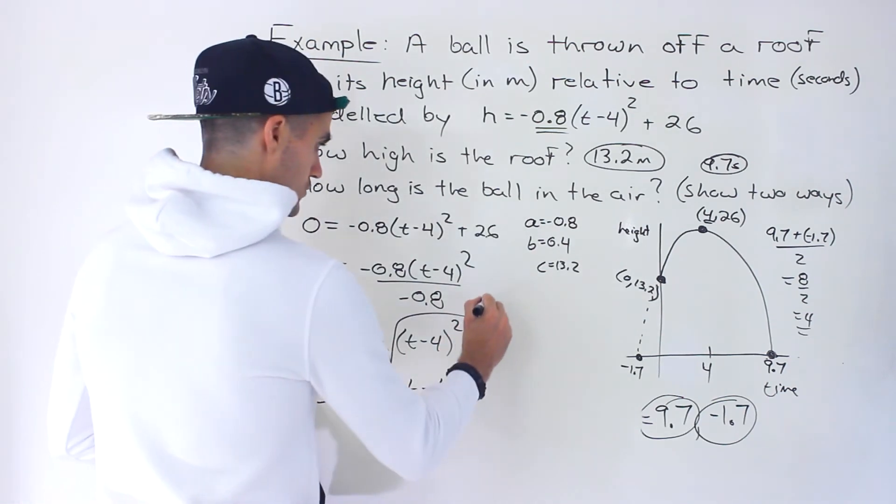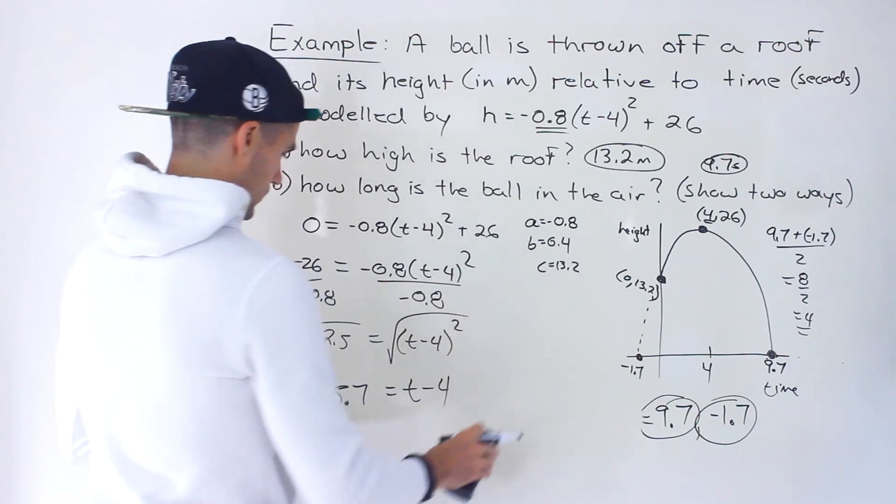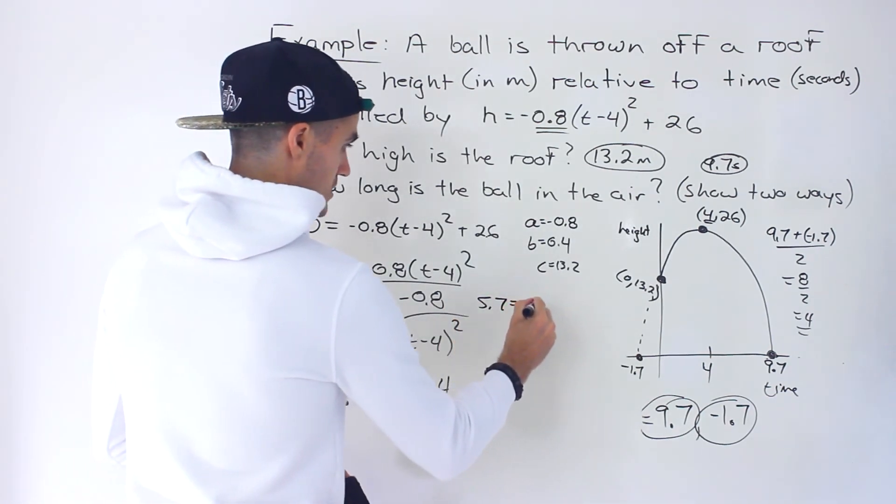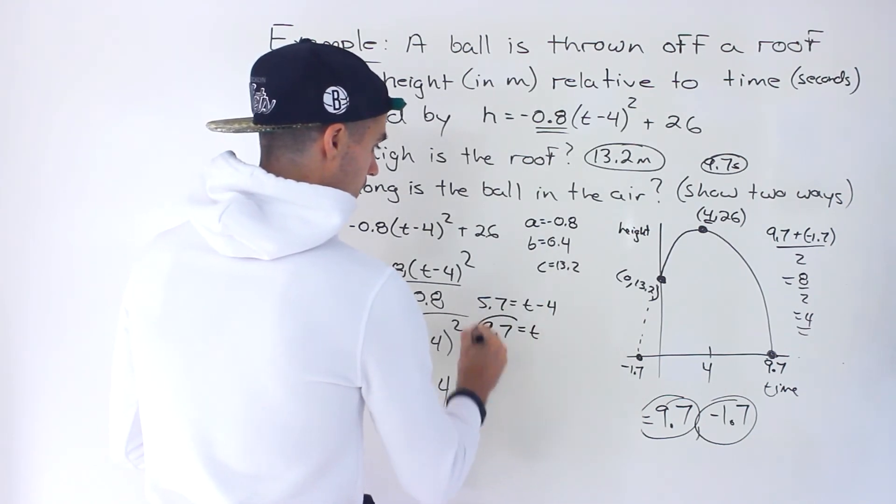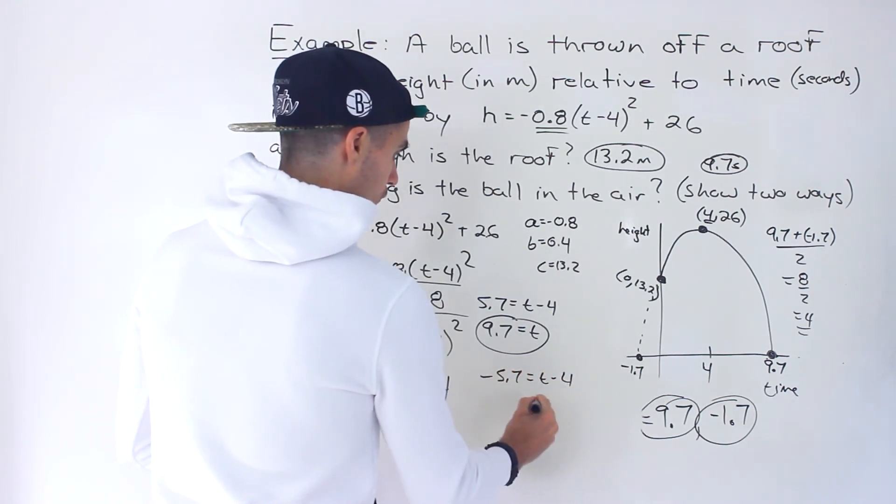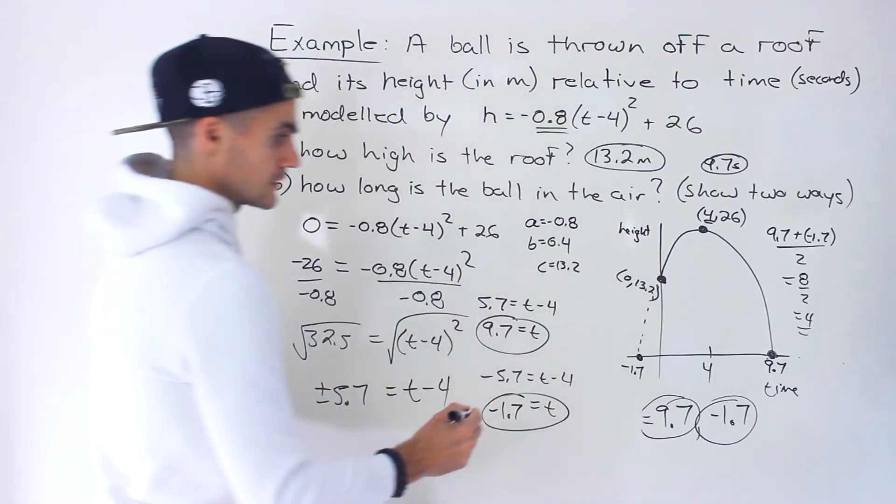Notice two different solutions. We'll either have positive 5.7 here, which is going to equal t minus 4. When we bring the 4 over, we'll get a t value of 9.7. Or we'll have negative 5.7 equals t minus 4, bring the negative 4 over, t would be negative 1.7.